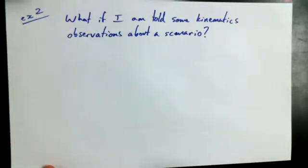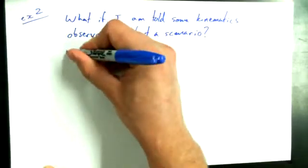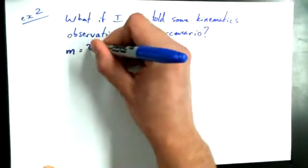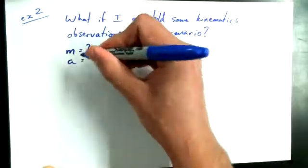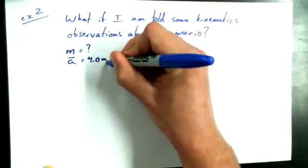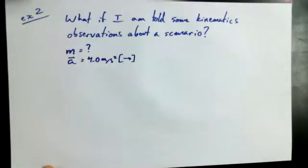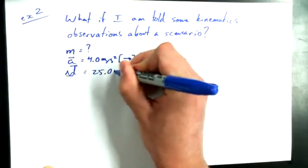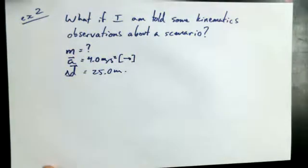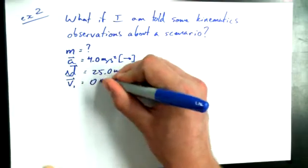Let's make up a scenario. We've got an object with an unknown mass, and somebody observed this object to be moving with an acceleration of 4.0 meters per second squared to the right. Somebody observed that thing to move a displacement of 25.0 meters, and it was observed to start from rest, 0 meters per second.